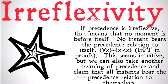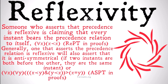We can also take another meaning of precedence and claim that all instants bear the precedence relation to themselves — that's what happens if we say precedence is in fact reflexive. Someone who asserts that precedence is reflexive claims that every instant bears the precedence relation to itself, or formally: for all x, x does precede x. We represent that as R-E-P-T in proofs.